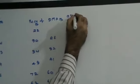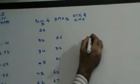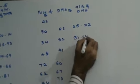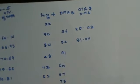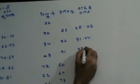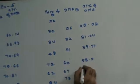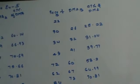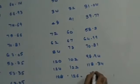Similarly, 97% of DMA for B: 25.22, 31.04, 39.77, 58.2, 64.99, 70.81, 98.94, 118.34, and 122.22.